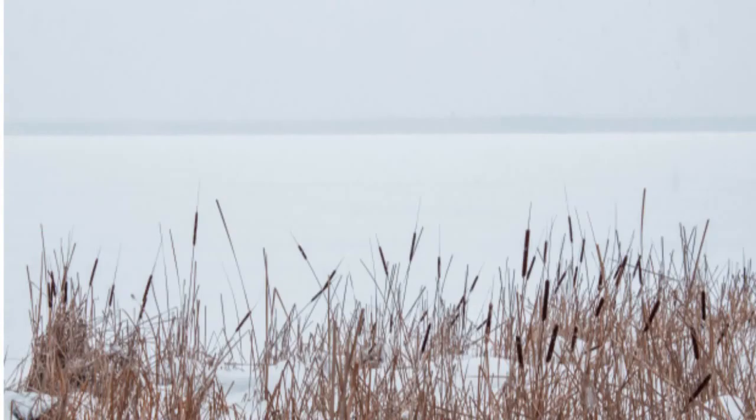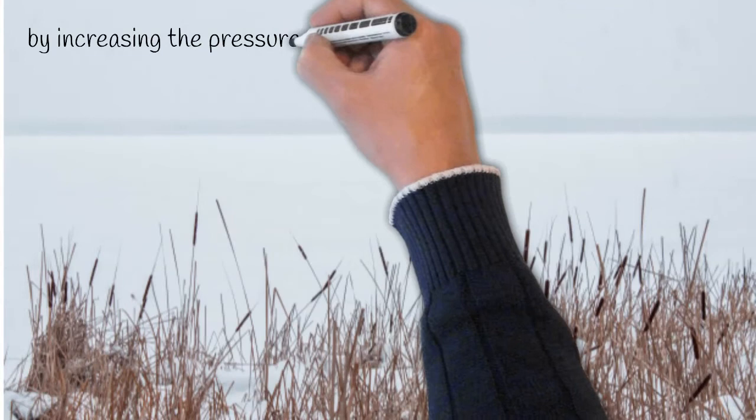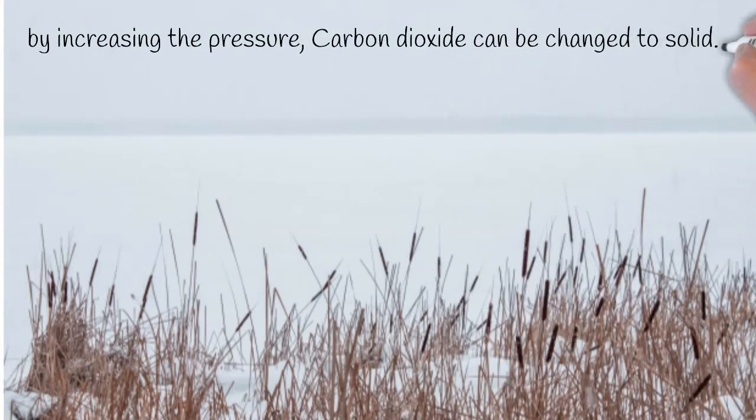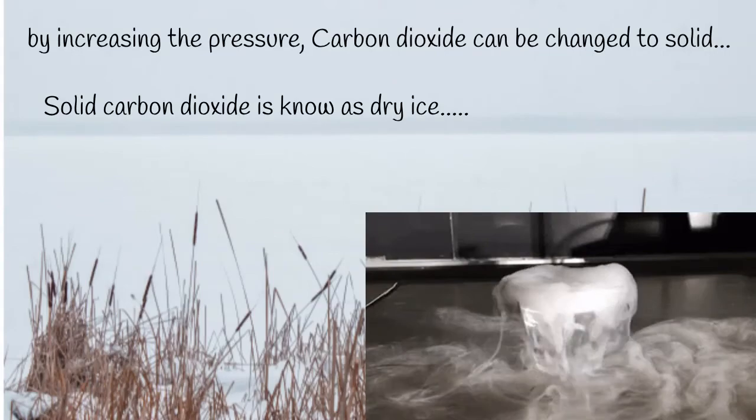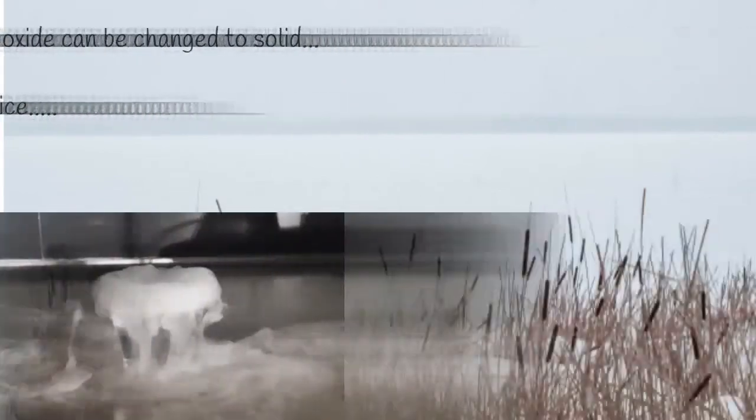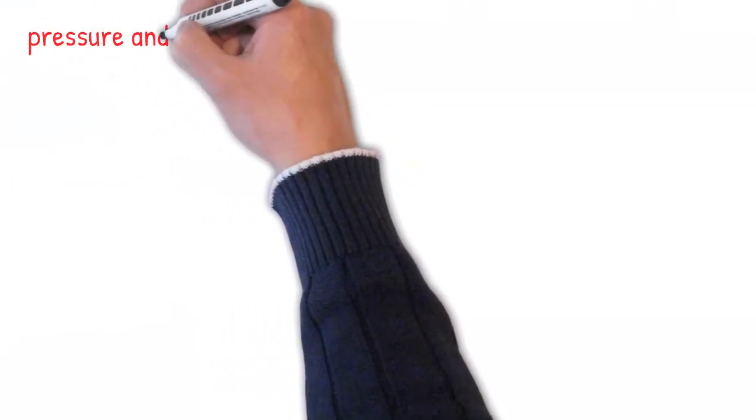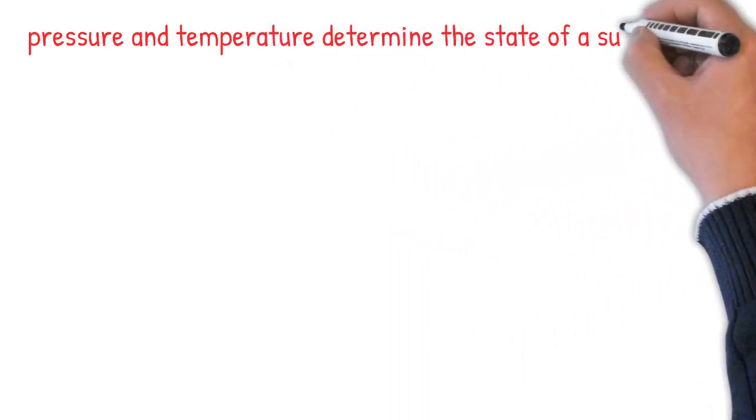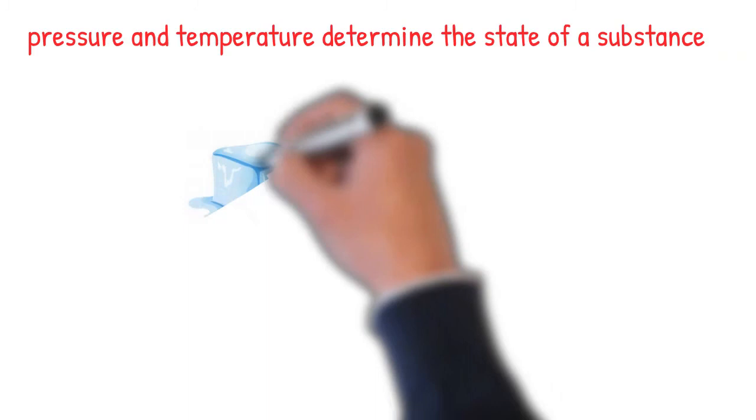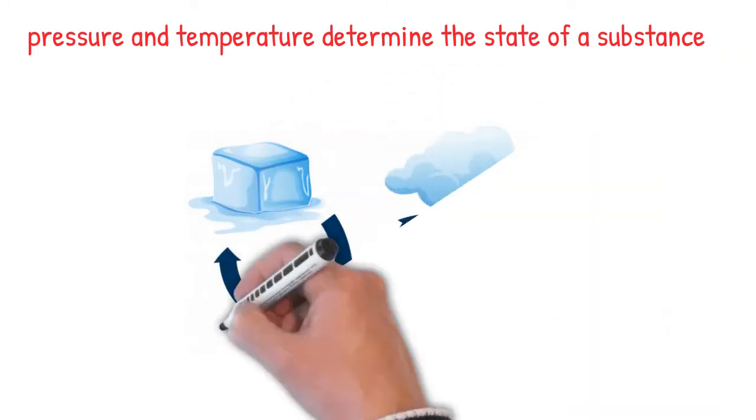By increasing the pressure, carbon dioxide can be changed to solid. Carbon dioxide is known as dry ice. Thus, it can be said that pressure and temperature determine the state of a substance, whether it will be solid, liquid or gas.